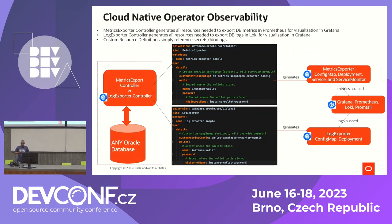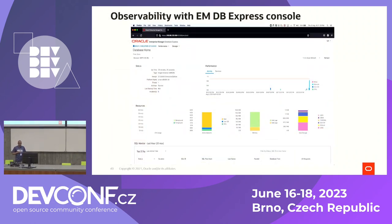In terms of observability, we have metrics and log exporters, so you can leverage Prometheus and Grafana to get metrics and observe your database — a common requirement. Depending on the specific database version, there's also Enterprise Manager Database Express, providing basic observability with live charts.